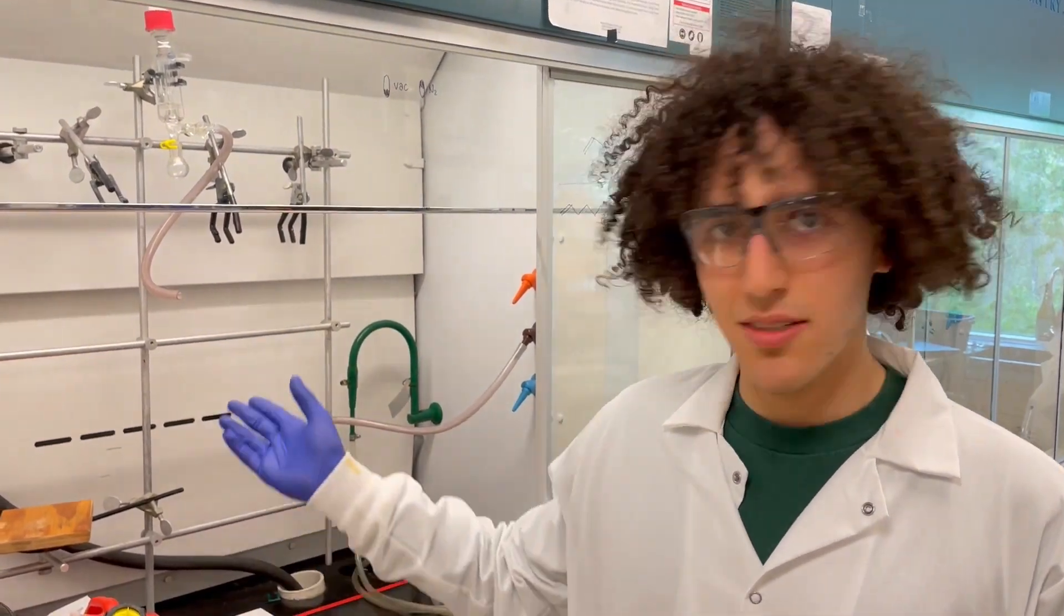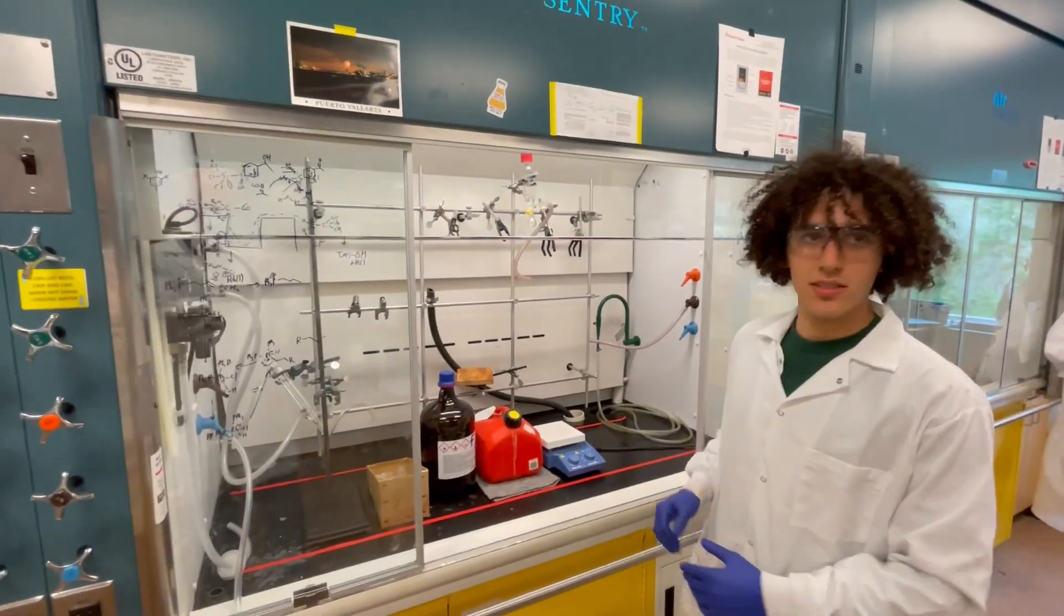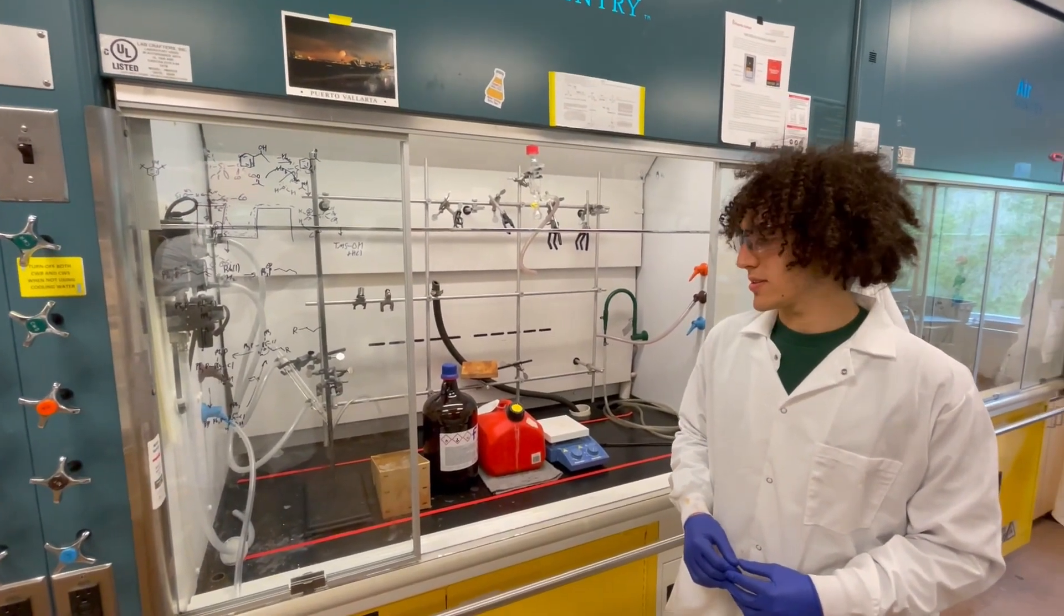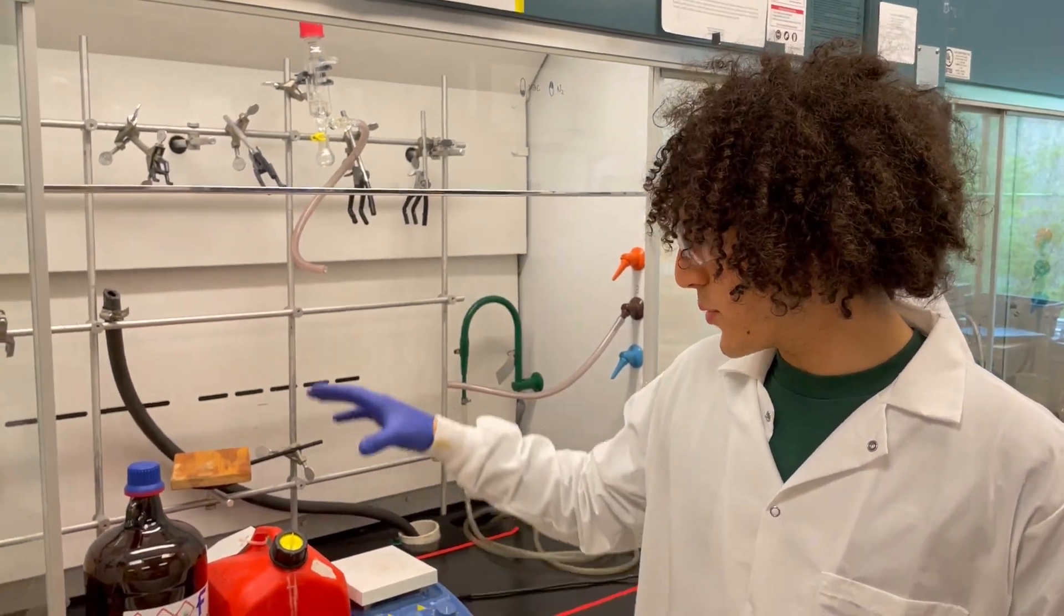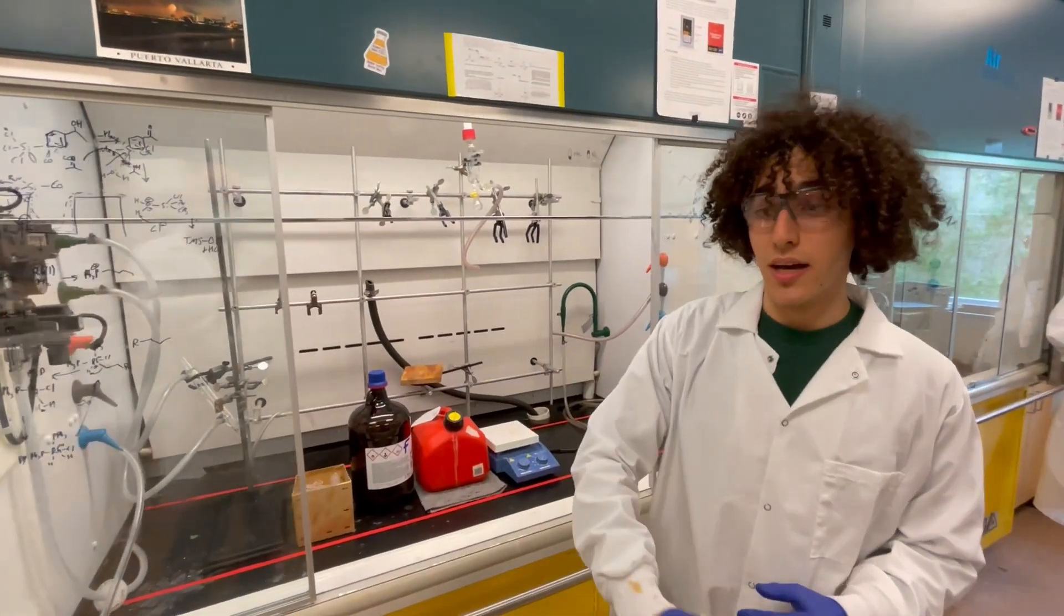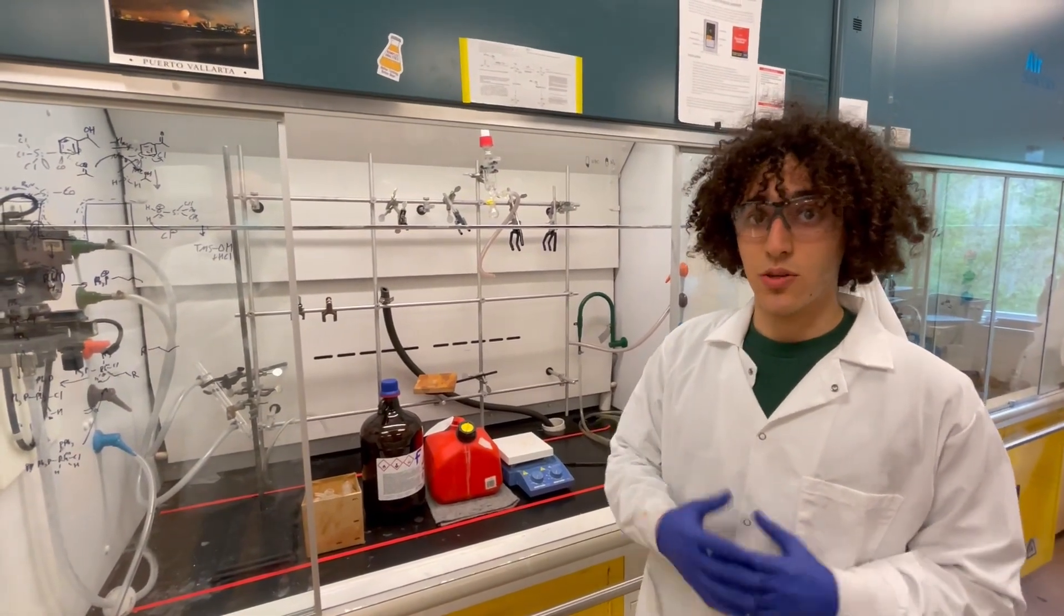Fume hoods, such as the one beside me, are semi-enclosed workspaces often found in scientific laboratories, where inside of them air circulation is maintained such that vapors produced inside the fume hood do not spill outside, as this may present a risk to researchers.